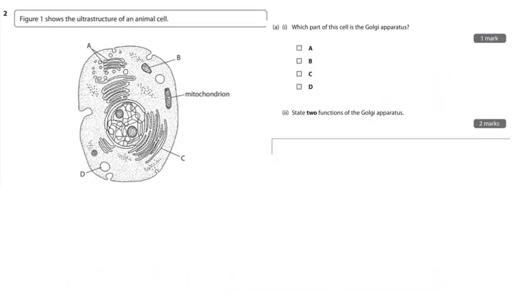Figure 1 shows the ultra-structure of an animal cell. Which of these labels is the Golgi apparatus? And you should remember, it's the very first video, it's A. A is the Golgi apparatus, this thing here.